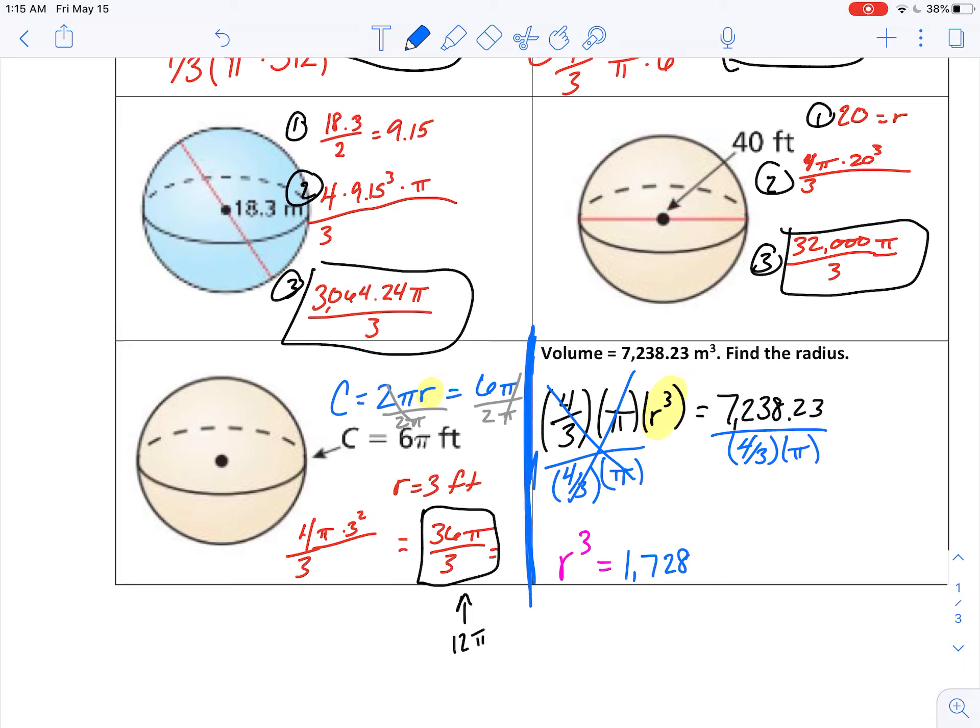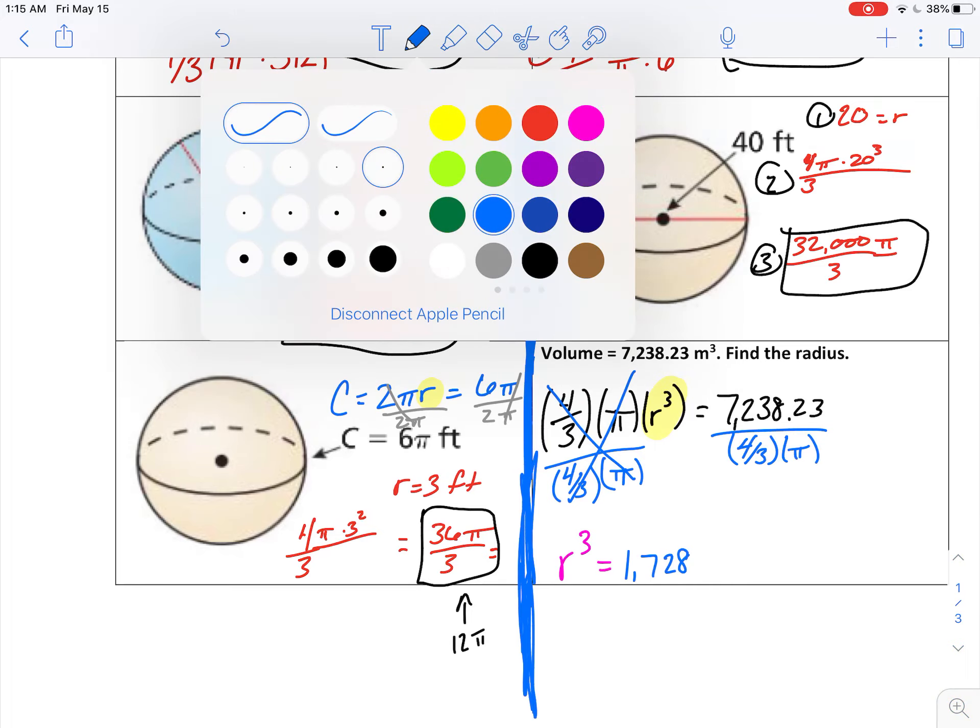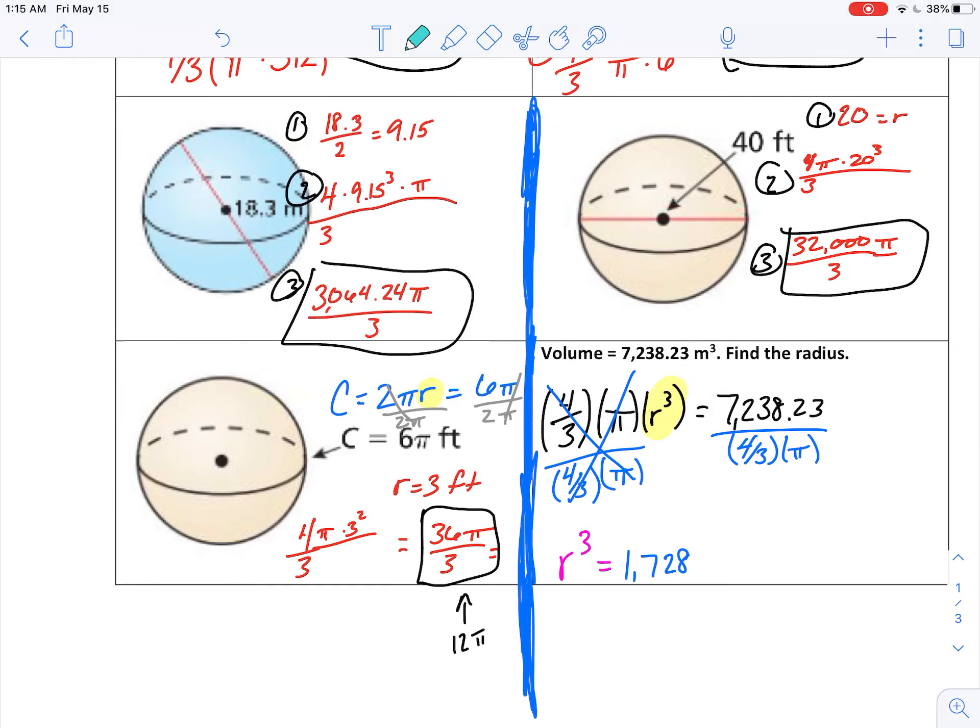But what is our method for getting rid of an r cubed? What's the opposite of cubing a number? Well, the opposite of cubing is cube rooting. We'll take the cube root of both sides. And the cube root of 1,728 is 12. So I know my radius is 12.